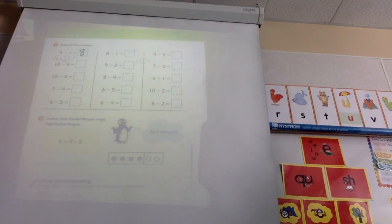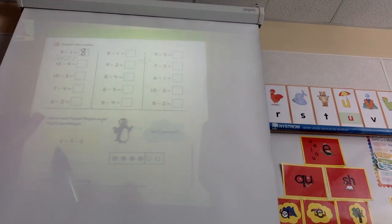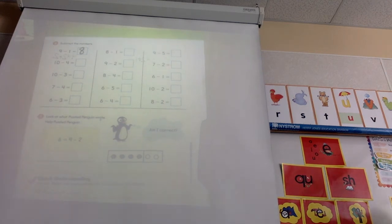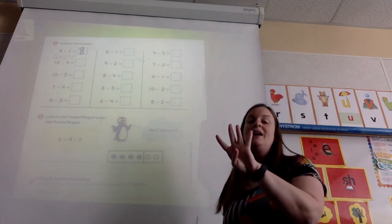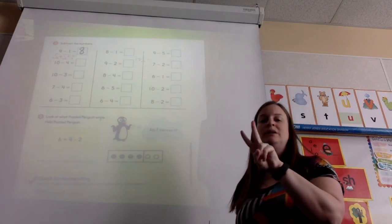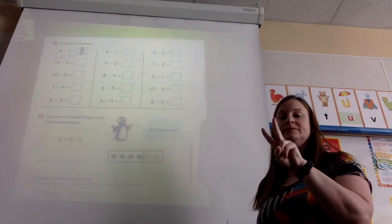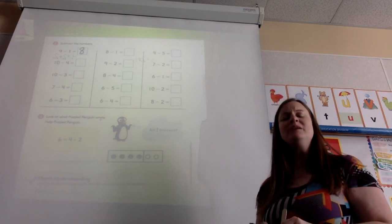So let's look at the Puzzled Penguin part. He has six equals four minus two. Well, if I put four fingers up and I minus two, do I get six? What do you think Puzzled Penguin did?